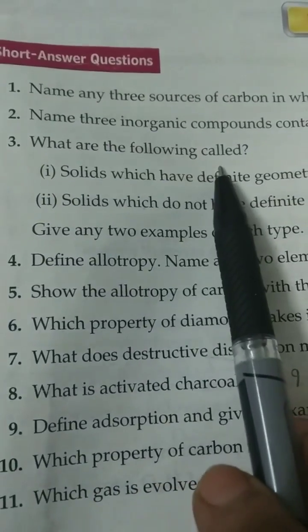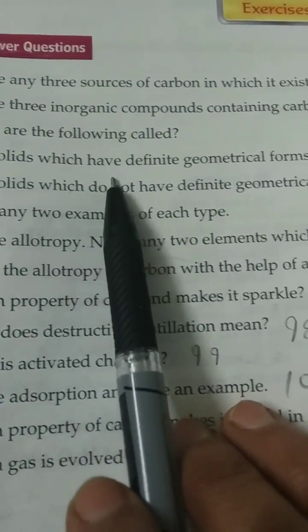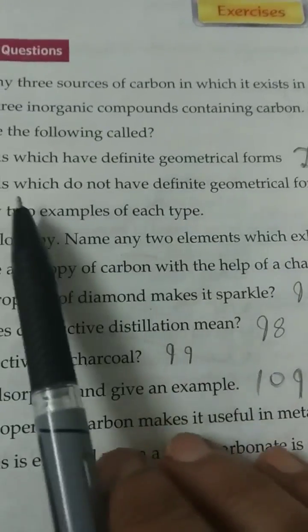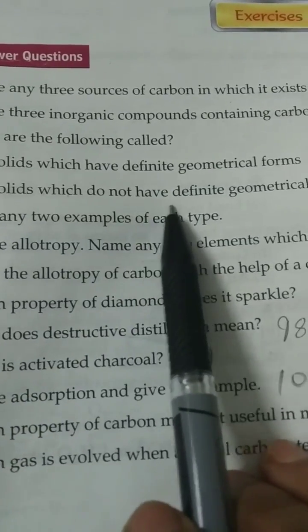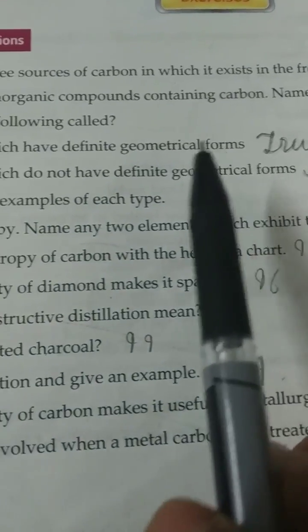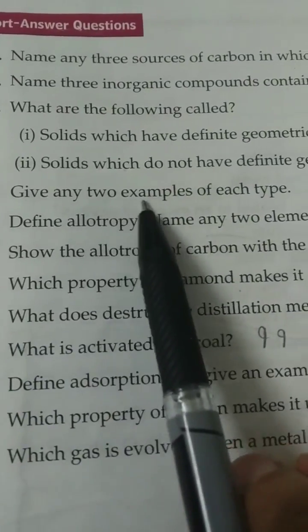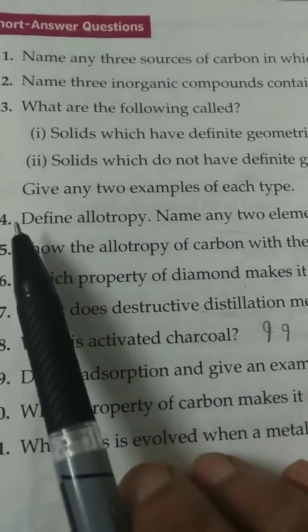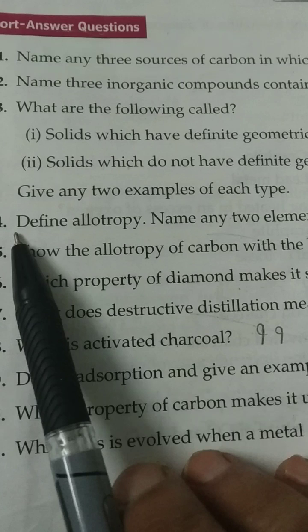What are the following called? First, solids which have definite geometrical forms. Second, solids which do not have definite geometrical forms. Give any 2 examples of each type. First, true solid. Examples: diamond, graphite. Second, pseudosolid. Examples: lampblack, coke. You can write instead of true solid, crystalline, and instead of pseudosolid, amorphous term.